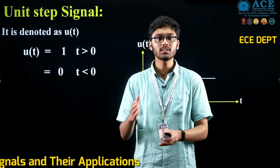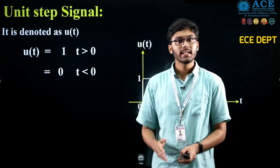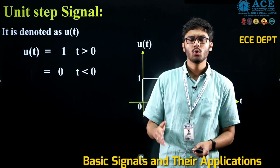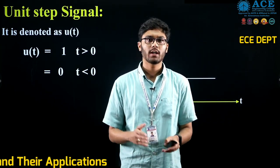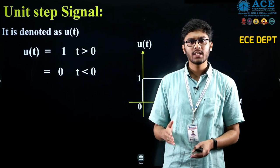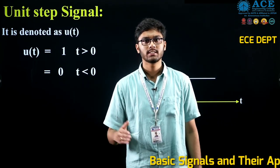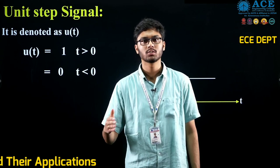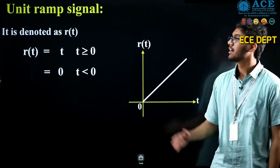Its amplitude is 1, that's why we call it a unit step signal. The real-time application is that we can know the time domain specifications of a control system by applying a unit step signal. We can also determine how quickly a system responds to a sudden change in the input.